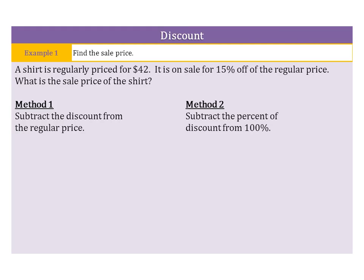So if we start with method one, subtracting the discount from the regular price, we can once again use our percent equation, which is part equals percent times our whole. Well, our part here we don't know. That's our discount, so that's going to be d. Our percent here is 15%, but remember, we have to move the decimal place over twice to the left to get this into a decimal, 0.15, so our percent is 0.15 times our whole, which is 42.